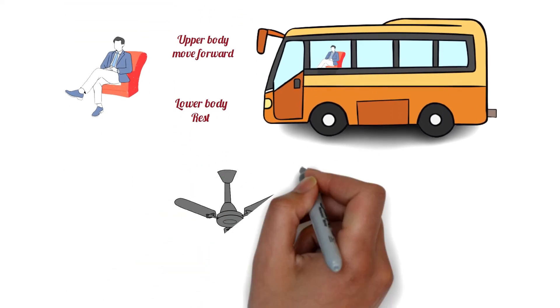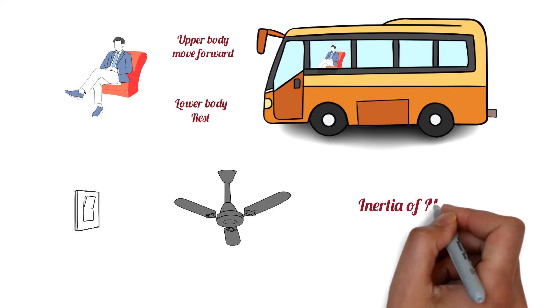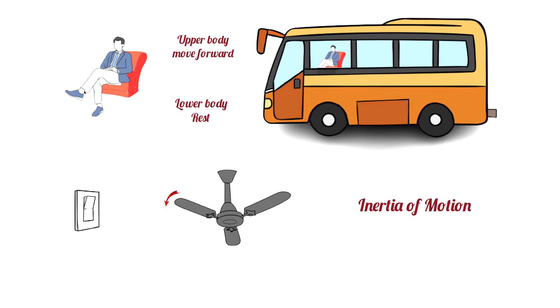Another example of inertia of motion is when an electric fan is turned off, the fan does not stop immediately. Due to inertia of motion, the fan continues to spin for a while until the frictional force between the moving parts of the fan and the air resistance stops the fan completely.